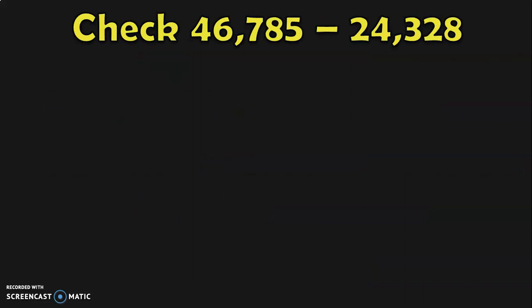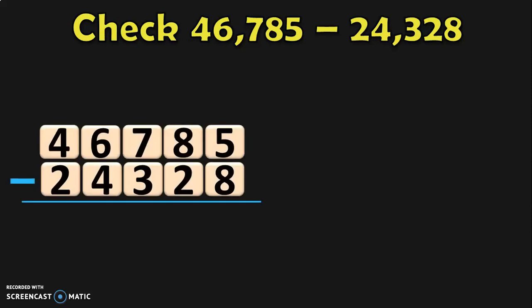Check 46,785 minus 24,328. Here we have two five-digit numbers on which we are going to perform the subtraction operation. Write down the numbers one below the other and write down their place values: ones, tens, hundreds, thousands, and ten thousands, as we are dealing with five-digit numbers. Begin the subtraction from the ones place.